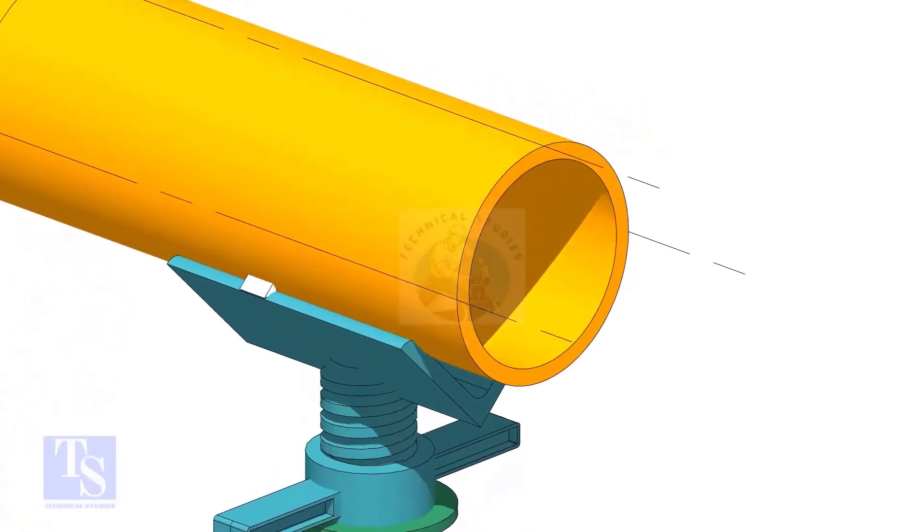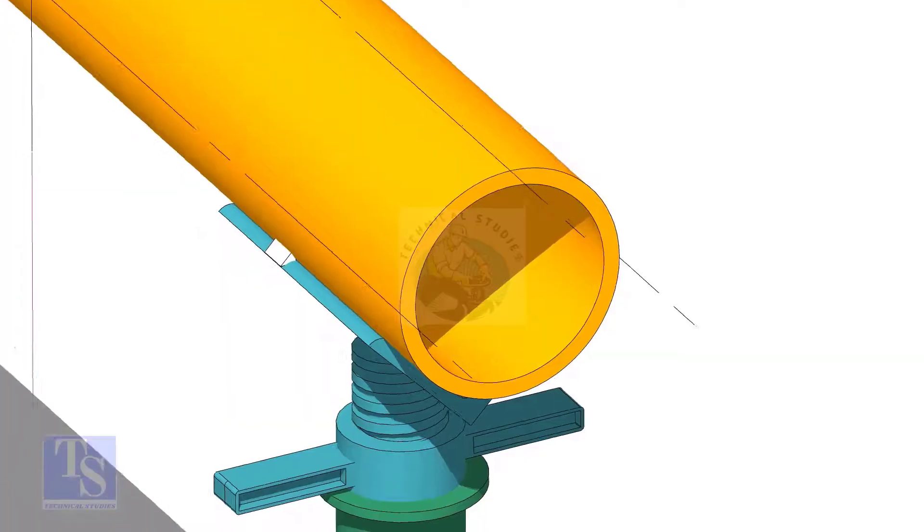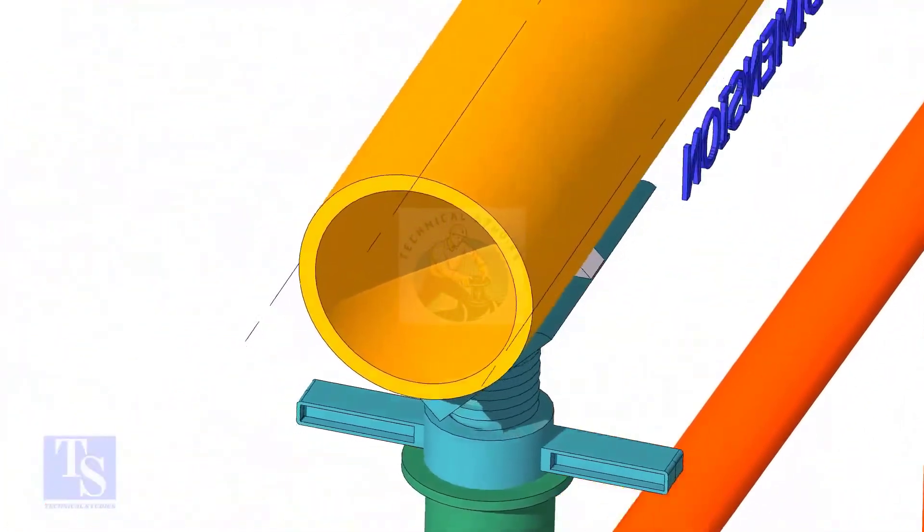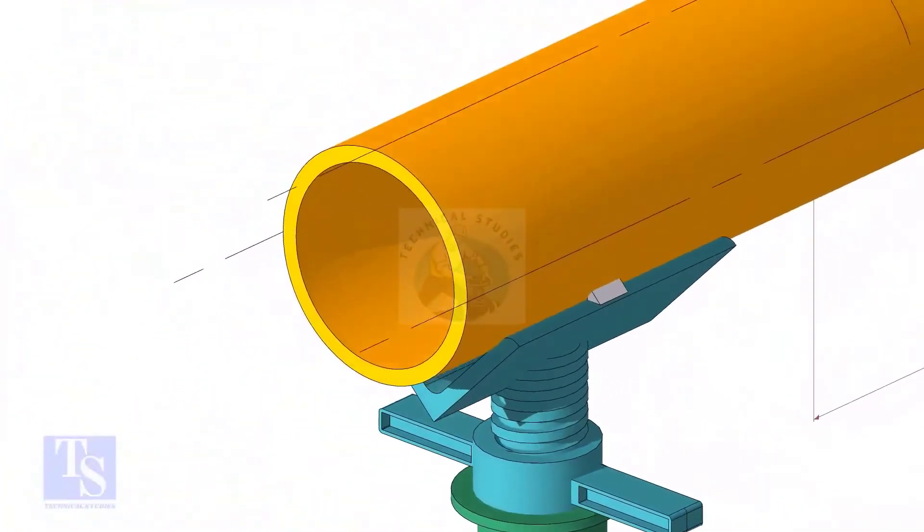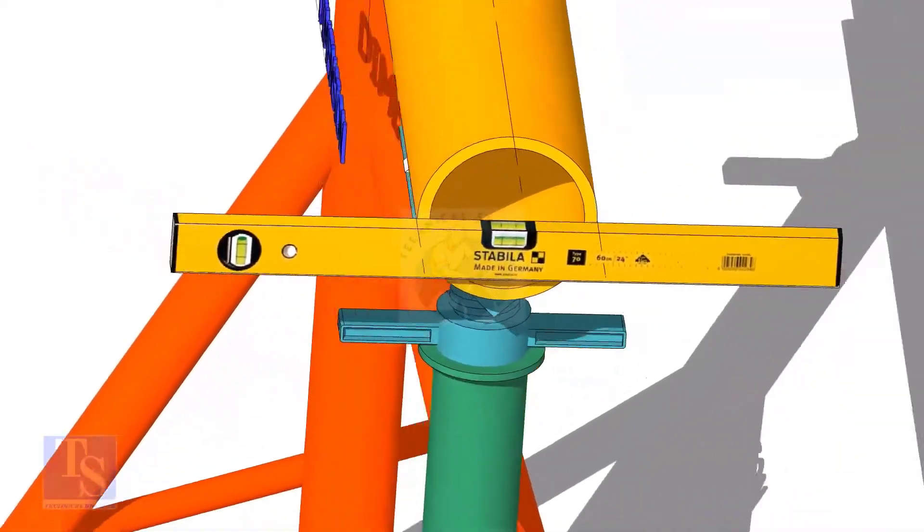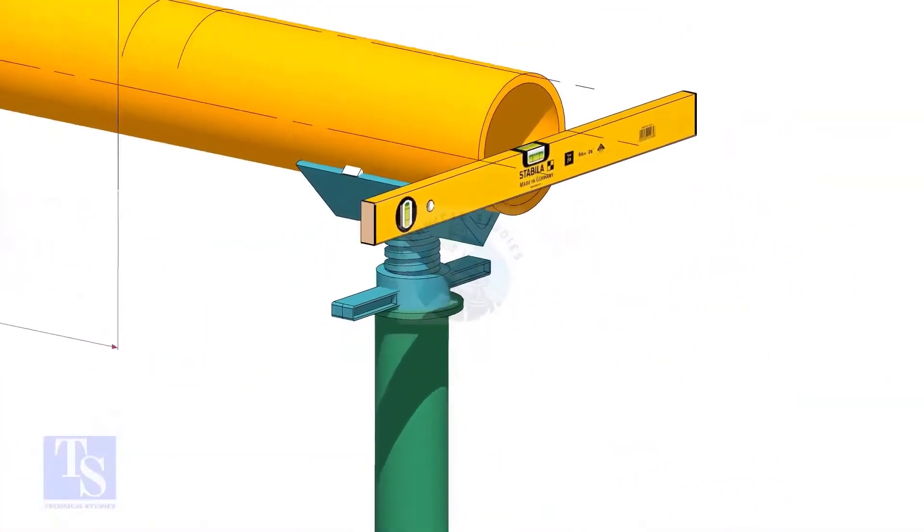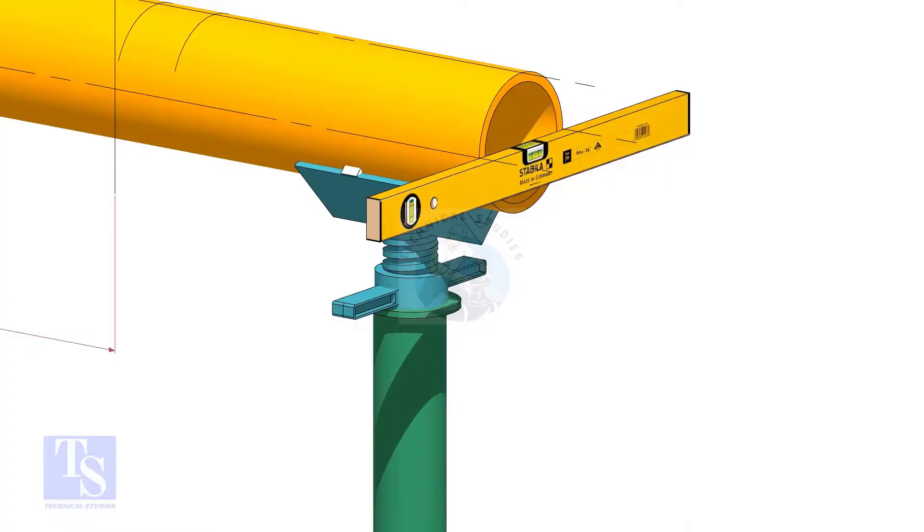After leveling the pipe, mark the center line and two quarter lines. Arrest the pipe if required, make small tack welds.